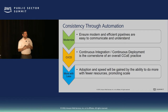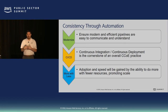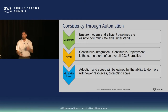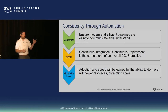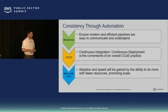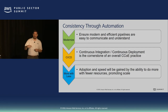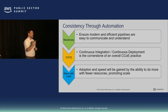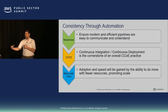Automation is really key. We're going to talk a lot today about consistency and repeatability. Automation is a big piece. Cloud Center of Excellence, with everybody focused on that piece, is going to allow for modernized infrastructure, modern and efficient pipelines — easy to communicate and understand, because you're going with an organizational focus here.